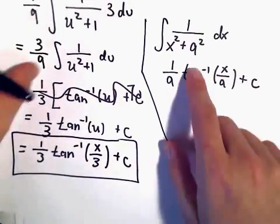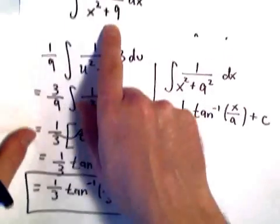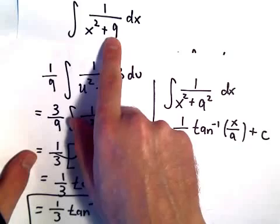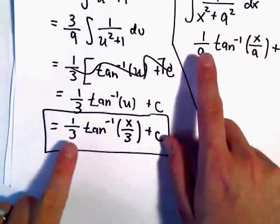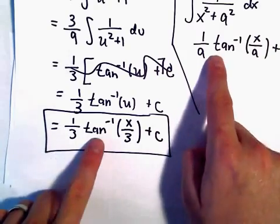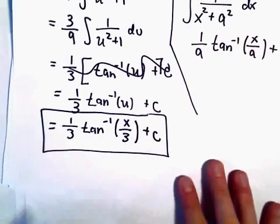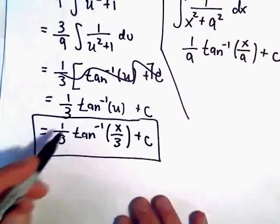So it basically says, and in this case, 9, we could write that as 3 squared. So we have x squared plus 3 squared. Well, that would give us again, 1 over 3 arctangent of x over 3. So kind of a nice little shortcut to remember.